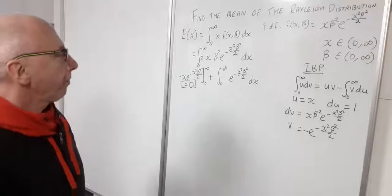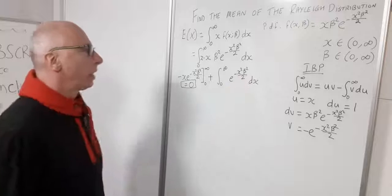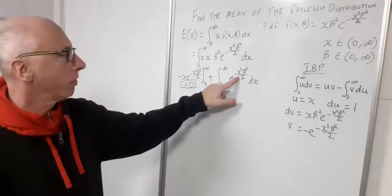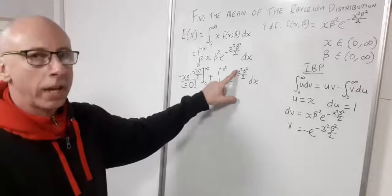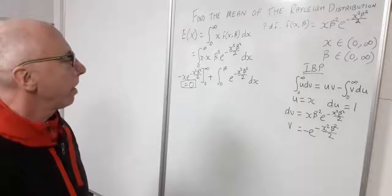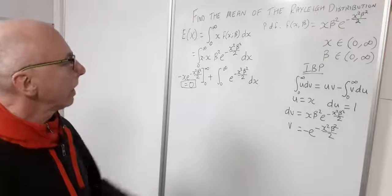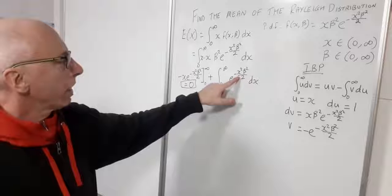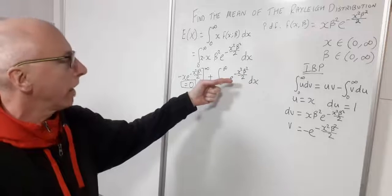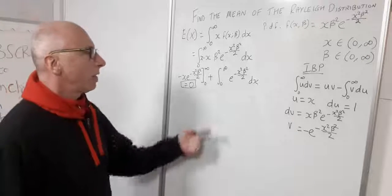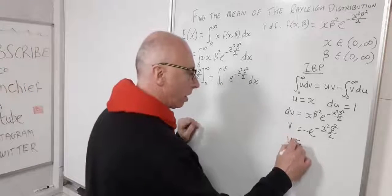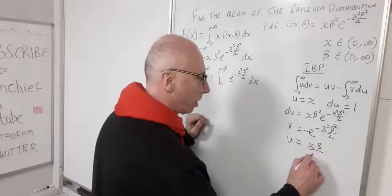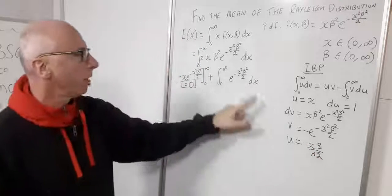A u substitution on e to the minus x squared won't work because there is no x factor to cancel the derivative of x squared. However, e to the minus x squared looks like the Gaussian error integral. With the beta squared over 2 factor, we do a substitution: let u equal x times beta over the square root of 2, so u squared equals x squared beta squared over 2.